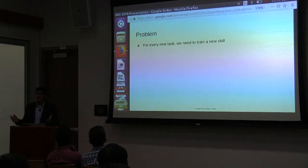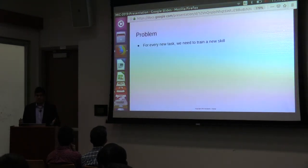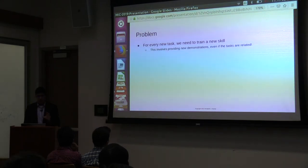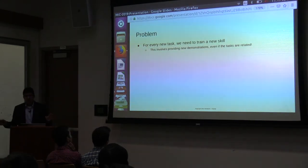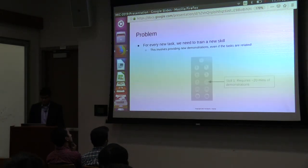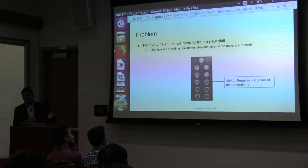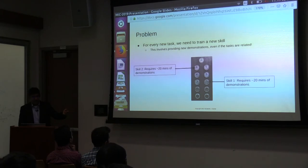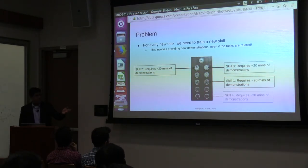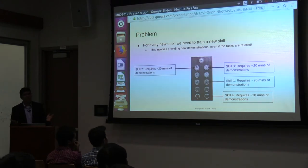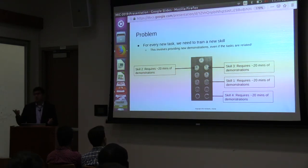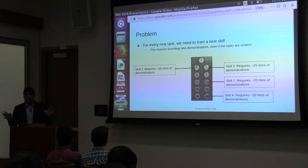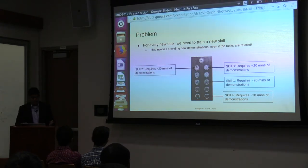But this approach has a couple problems. Specifically, for every new task, we need to train it from scratch once again. So we need to train a new skill. And this may involve providing 30 minutes of new data every single time, even if the tasks are kind of related. Specifically, let's say we wanted to train a robot to press buttons. Fairly simple, right? If I wanted to train it to press button 3, that's 20 minutes. Another button, 20 minutes. Another 20 minutes, and so on. And this really doesn't make too much sense. As a human, you learn to press one button and then you can generalize that anywhere, because you know that the only thing you're varying is where you're pressing the button.